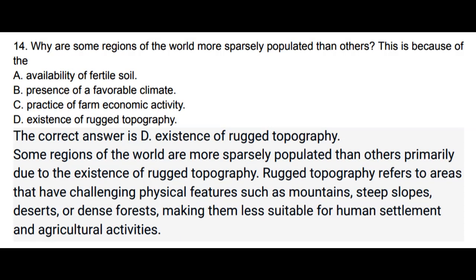Question 14: Why are some regions of the world more sparsely populated than others? Options: a) Availability of fertile soil, b) Presence of a favorable climate, c) Practice of farm economic activity, d) Existence of rugged topography. The correct answer is d. Some regions of the world are more sparsely populated primarily due to the existence of rugged topography. Rugged topography refers to areas with challenging physical features such as mountains, steep slopes, deserts, or dense forests, making them less suitable for human settlement and agricultural activities.